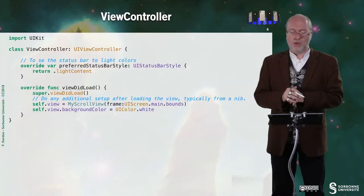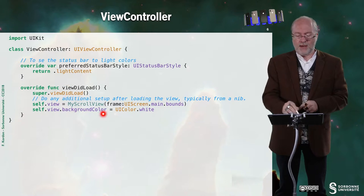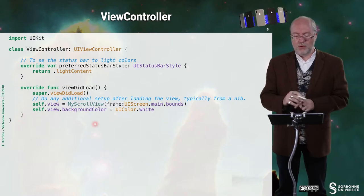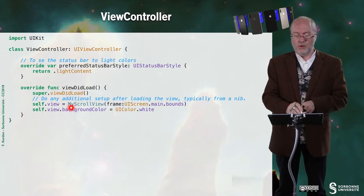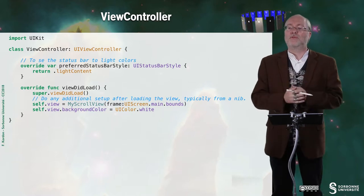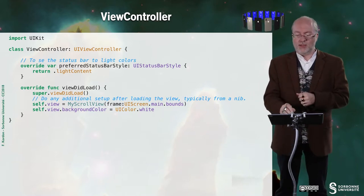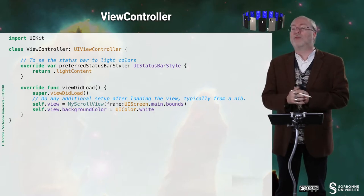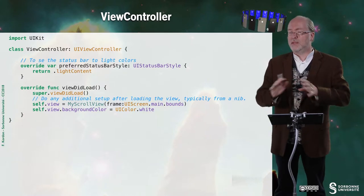Let's have a look at the view controller — I program it in Swift. This is very classical. Here I have the viewDidLoad, and the viewDidLoad creates an instance of my scroll view and sets up the background color to white. That's all.